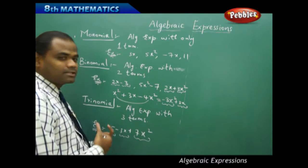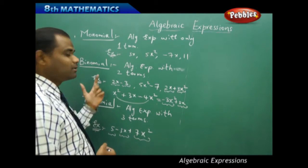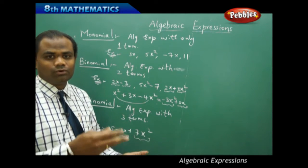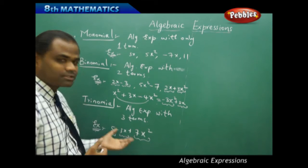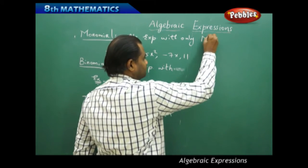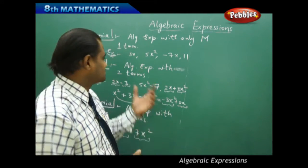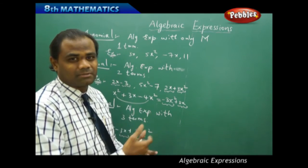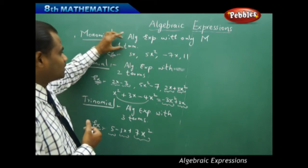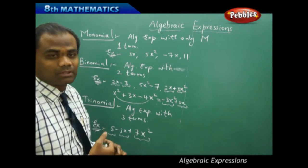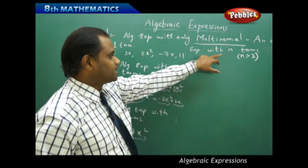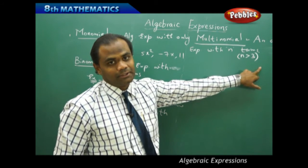So those are the three basic types: monomial, binomial, and trinomial. There are also expressions with more than three terms — four, five, six, or more. Generally, any expression with more than three terms is called a multinomial. So n equals 1, 2, 3 is defined for monomial, binomial, and trinomial respectively, and an algebraic expression with n terms where n is greater than 3 is called a multinomial.